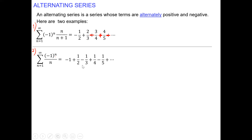Let's look at this one — negative one to the n over n plus one. The main formula b sub n is n over n plus one, giving us one half, two thirds, three fourths, and so on with alternation. Looking at the first formula, we may notice that we can apply the test for divergence.